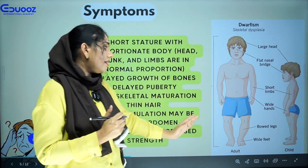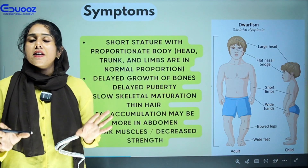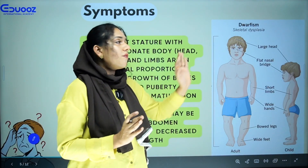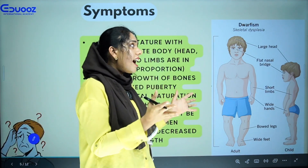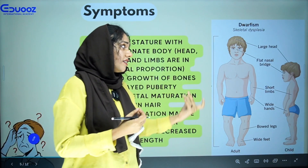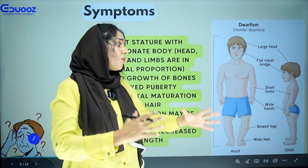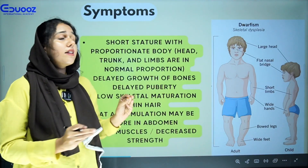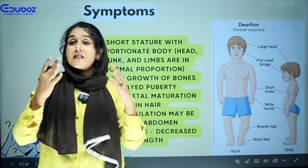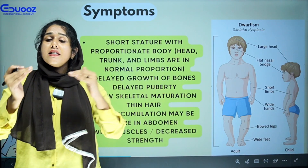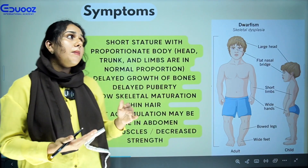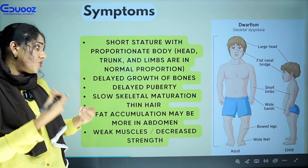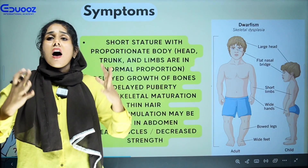In this diagram, we see a difference between a normal adult and a child with dwarfism. Features of pituitary dwarfism include a large head, flat nasal bridge, short limbs, wide hands, and bowed legs. In pituitary dwarfism, all features are proportionate — head, trunk, and limbs are normal in proportion but short. There is delayed bone growth, delayed puberty, skeletal maturation issues, thin hair, and fat accumulation.